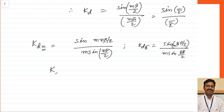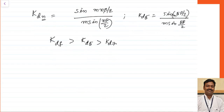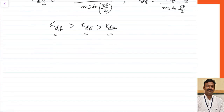It is observed practically that the distribution factor Kd for the fundamental component will always be greater than Kd for higher order harmonics. That means if you are employing distributed winding, the distribution factor will go on decaying for higher order harmonics. As a result, the EMF induced for higher order harmonics will be less than that of the fundamental harmonic.